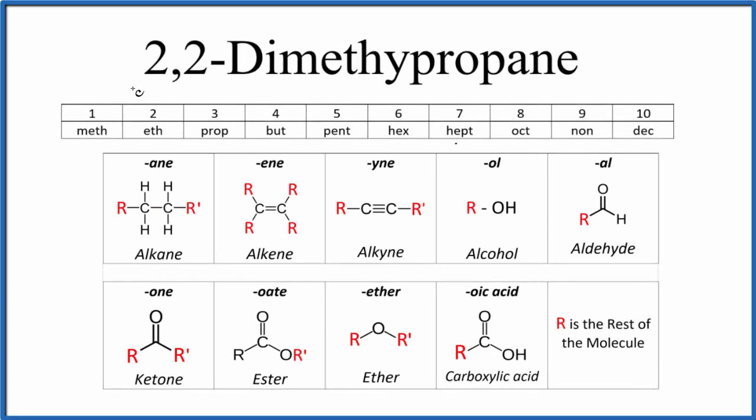Let's write the structural formula for 2,2-dimethylpropane. The first thing we notice is that it ends in A-N-E. That A-N-E tells us we have an alkane. For an alkane, it's going to be all carbon and hydrogen atoms and all single bonds.